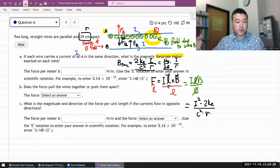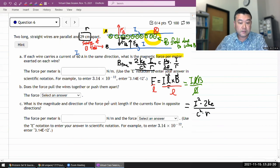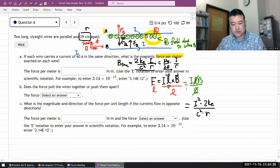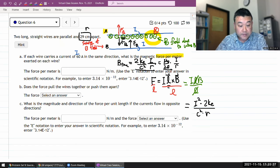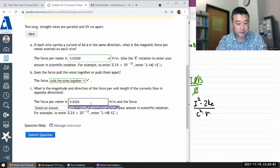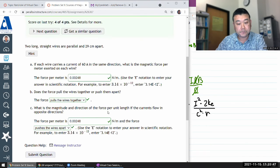So two currents flowing in opposite directions will repel first of all. And in terms of the magnitudes, nothing relating to the magnitudes have to change, so magnitude will remain the same. So having thought through all that, I'll just enter it without reworking out all the answers. It pushes the wires apart.